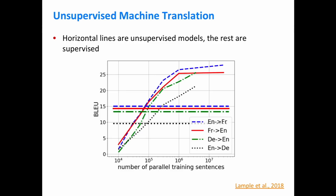Looking at results, the horizontal lines show unsupervised machine translation performance, while the rising lines show supervised MT performance as more data is added. Given a large amount of supervised data, supervised MT works much better. But the unsupervised MT model still does quite well — around 10,000 to 100,000 training examples, it actually does just as well or better than supervised translation. That's a really promising result, because in low-resource settings you can perform this well without even needing a training set.